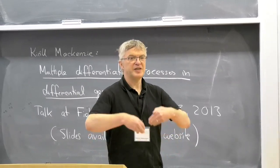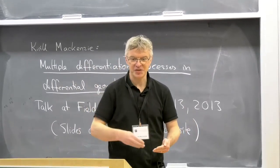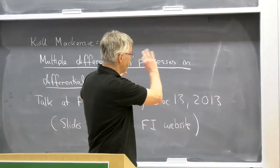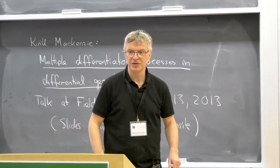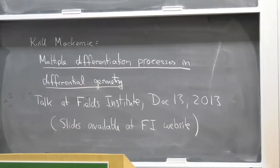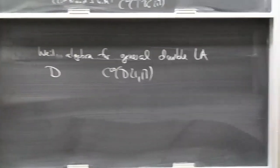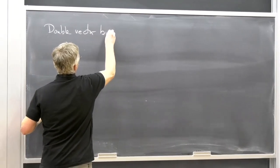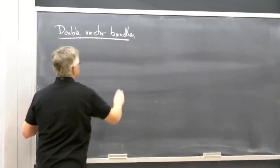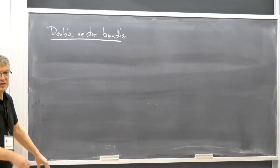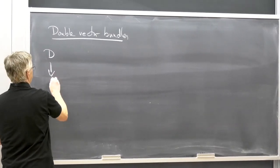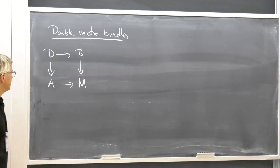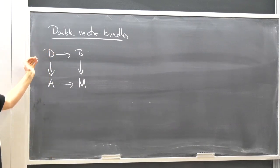For purposes of getting started, I should first talk about double Lie algebroids, and before that, about double vector bundles. Kirill's work is very much about double structures, and you can find all these things in his book and papers. The definition of double vector bundles has gone through several iterations — I think it was originally defined by Pradines, and then Mackenzie reinterpreted it: a double vector bundle is a manifold with two vector bundle structures.